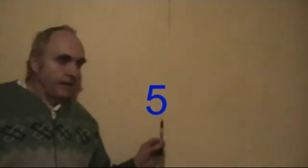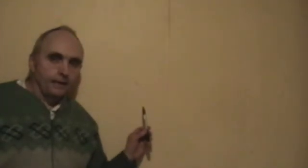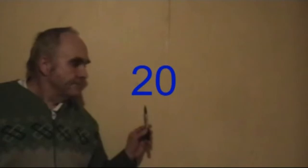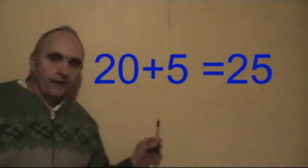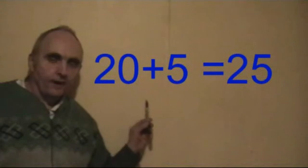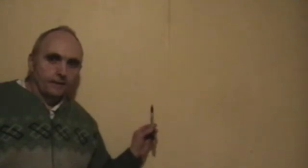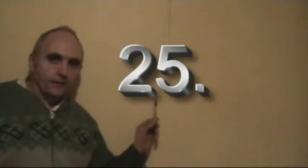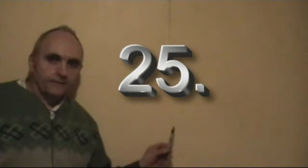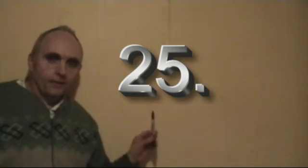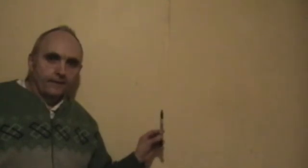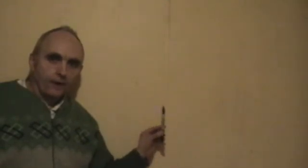Then you say 10 times 2 is 20, and you would add on the 5 that you carried, which would make it 25. So you would be back to 25 with nothing after the decimal point, which means that the 2.5 in the division sum was right.